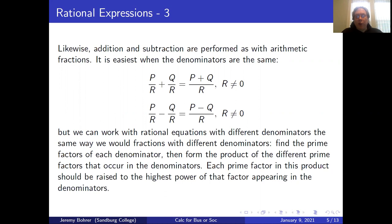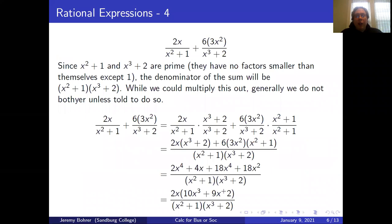We can work with rational expressions with different denominators the same way we would with fractions with different denominators. Find the prime factors of each denominator, then form the product of the different prime factors that occur in the denominators. Each prime factor in this product should be raised to the highest power of that factor appearing in the denominators. Here we have 2x over (x²+1) plus 3x² over (x³+2). The expressions x²+1 and x³+2 are prime — they have no factors smaller than themselves except 1. The denominator of the sum will be (x²+1)(x³+2); we could multiply this out, but generally we do not bother unless told to do so.